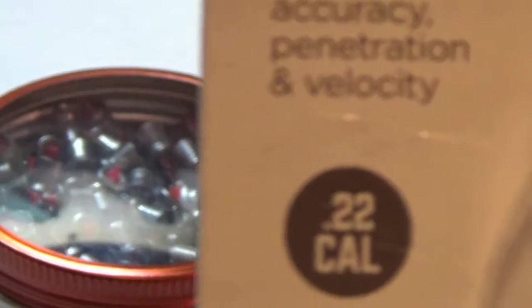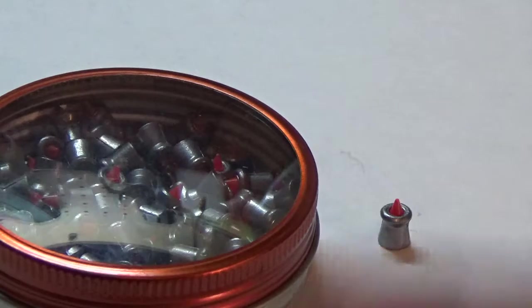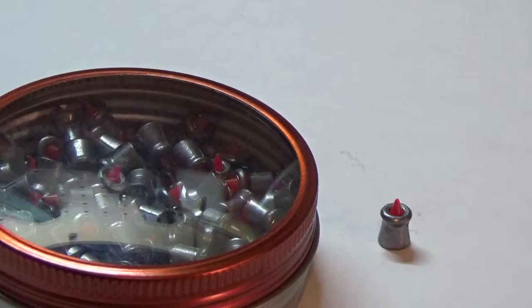They're actually .22 caliber. Yes, they do make .22 caliber air rifles and larger. This is made by Gamo. It's a hunting pellet. It's got a little projectile on the end of it to help with the aerodynamics.